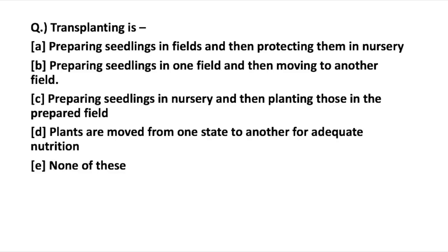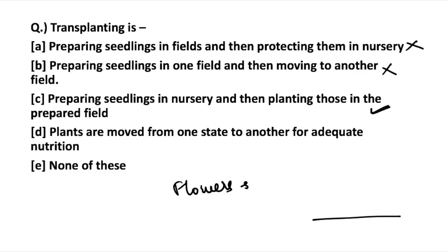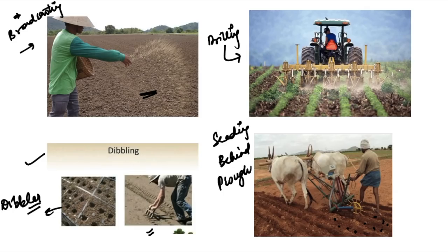The next question is about transplanting. The options are: (1) preparing seedlings in fields and then protecting them in a nursery — incorrect; (2) preparing seedlings in one field and then moving to another field — also incorrect; (3) preparing seedlings in nursery and then planting them in the prepared field — correct. Transplanting is the method where seedlings are prepared in a nursery, and then moved to the main field using a transplanter. It is usually used for flowers and vegetables, as flowers require a protective environment to grow, and it is quite time-consuming.